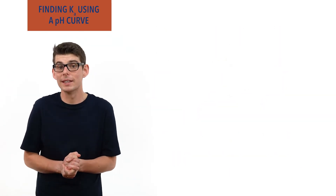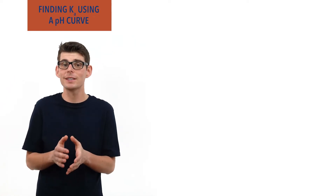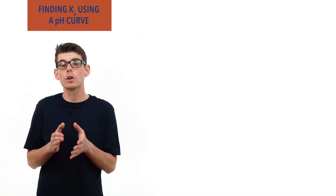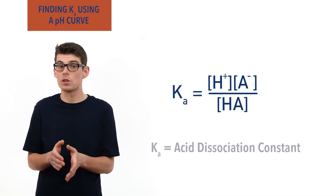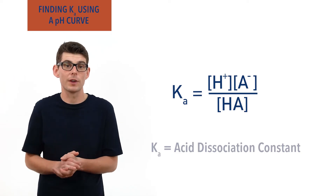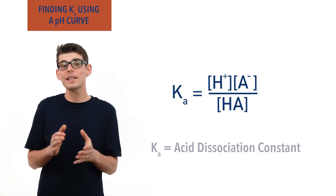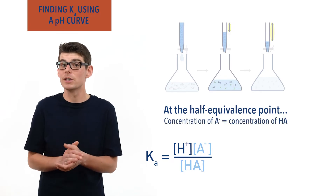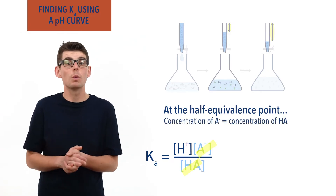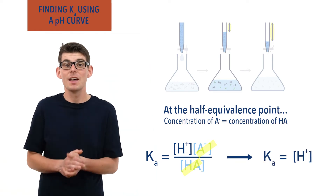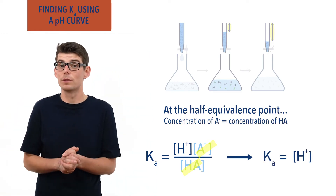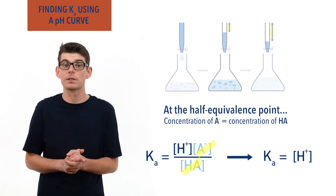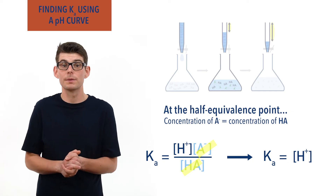For a weak acid, its Ka expression shows that Ka equals concentration of H+ ions times concentration of A-minus ions divided by concentration of HA. We've just seen that at the half equivalence point, the concentrations of A-minus and HA are the same, meaning they will cancel each other out in this expression, and Ka will equal the concentration of H+ ions. This means all we need to do to find the Ka of the weak acid is find the concentration of H+ ions in the solution at the half equivalence point, when Ka equals concentration of H+ ions.